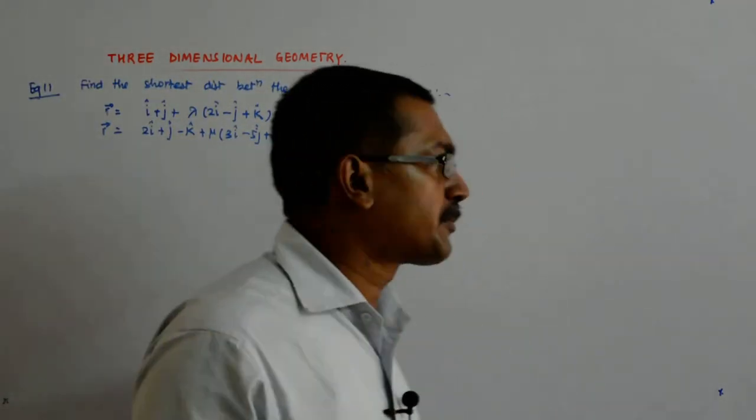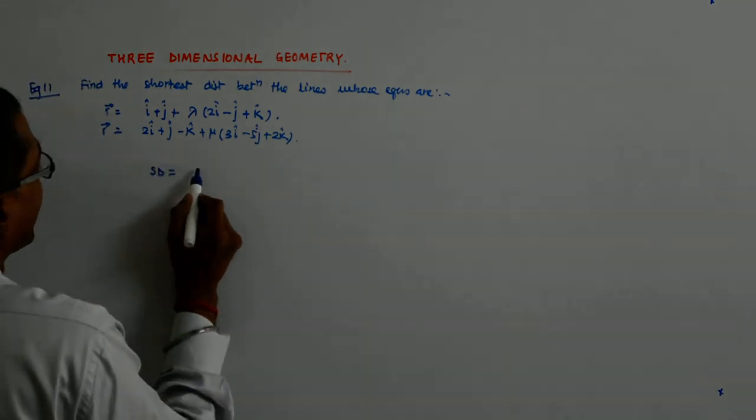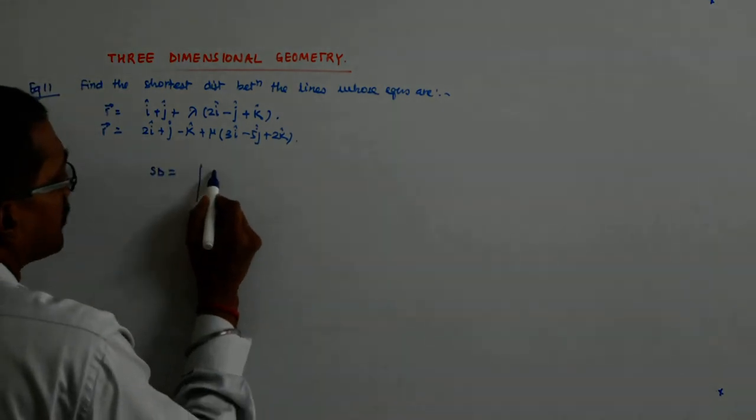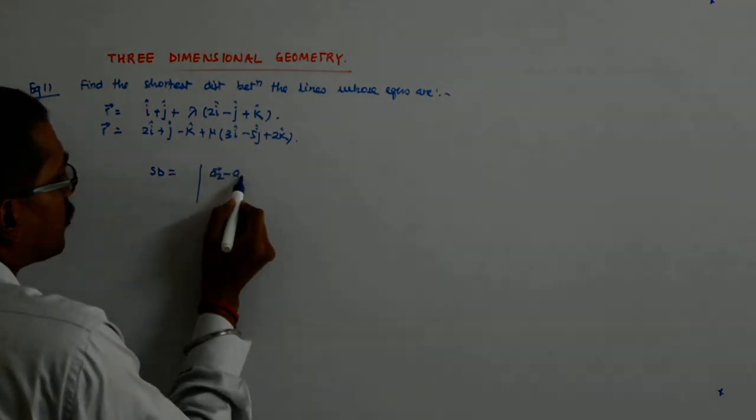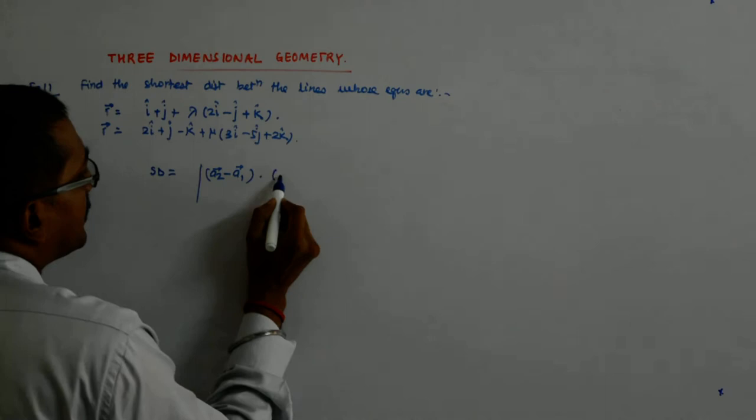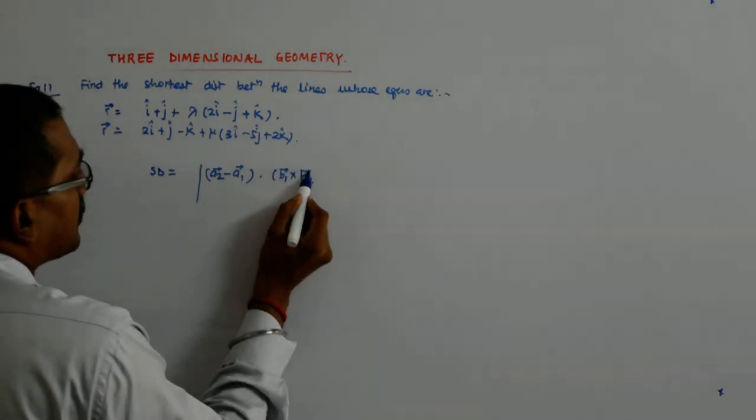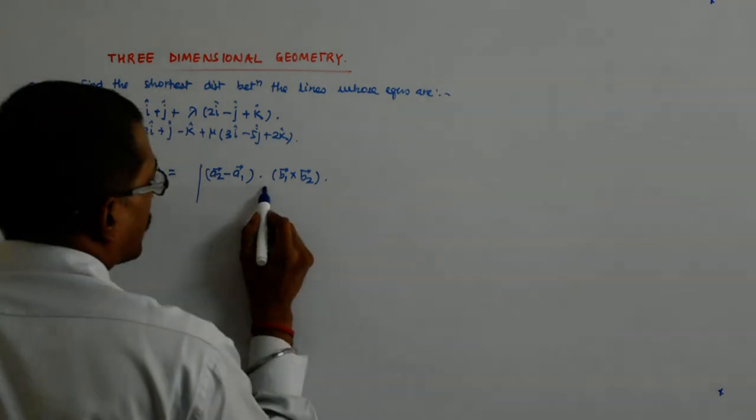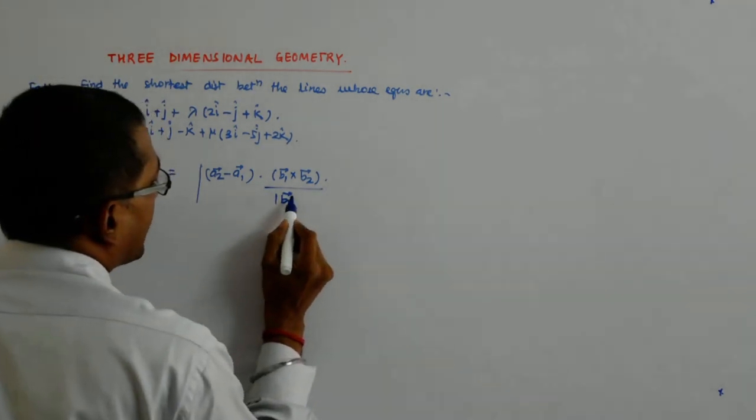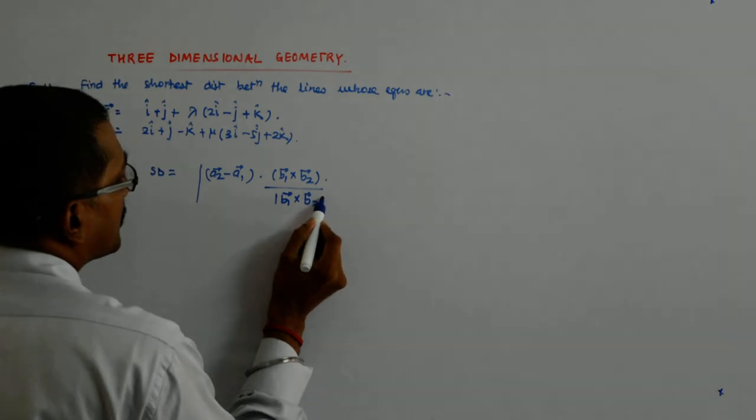So, what property will I be using? Shortest distance is mod of what? Anyone remembers? No. A2 minus A1 dotted with B1 cross B2 cap, a unit vector in that direction. So, that is why this has to be divided by B1 cross B2.